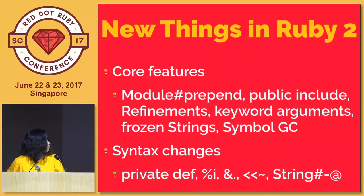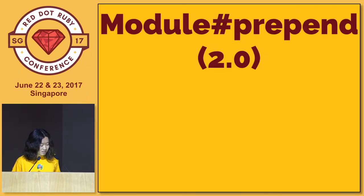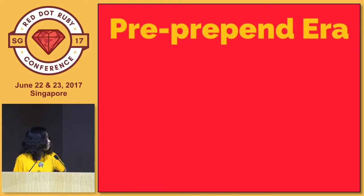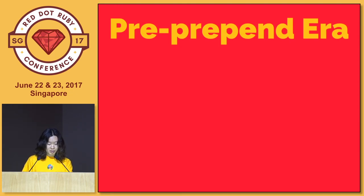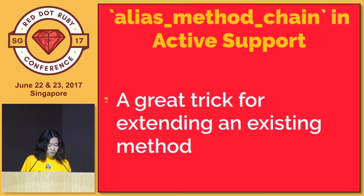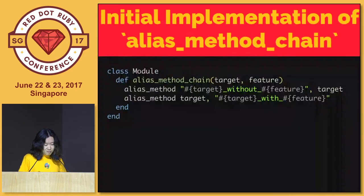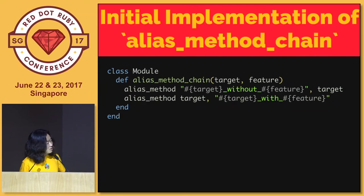These are some of the new things I'm going to cover in my talk today. Let's start off with module prepend. This is actually one of my favorite features of Ruby 2.0. Let's go back in history a little bit and see how we were dealing with monkey patches before prepend was introduced into Ruby. Before module prepend, we were using something called alias_method_chain to extend existing methods. It's part of ActiveSupport, and the implementation was just two alias methods. It was initially implemented back in 2006.